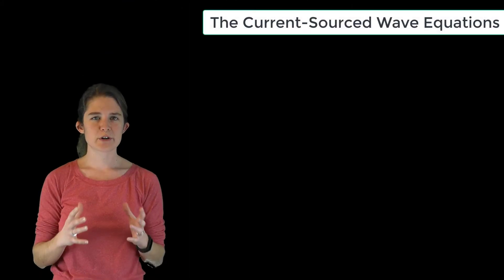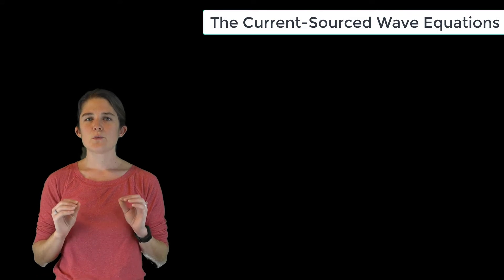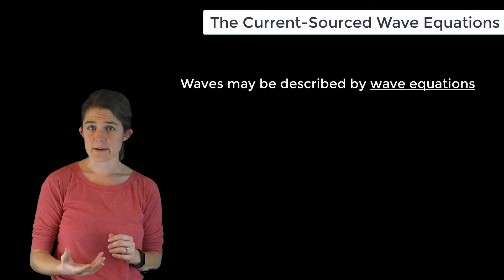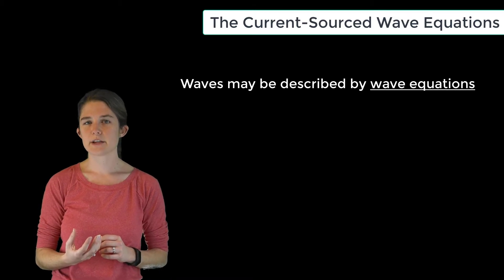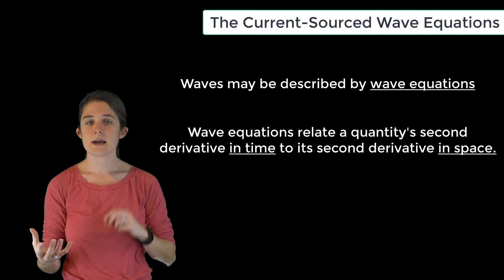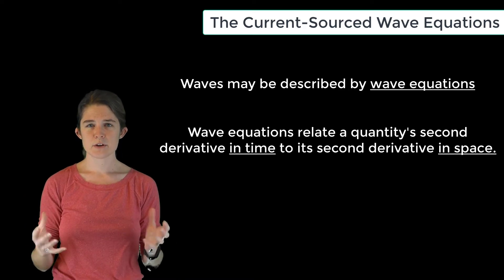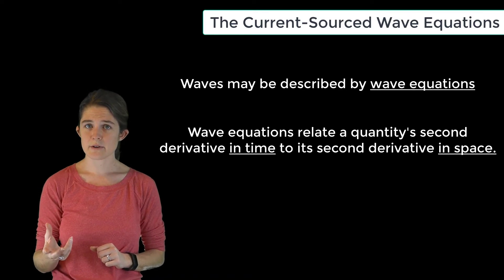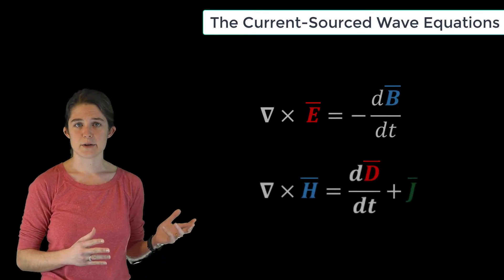Now let's look at this from a more strictly mathematical perspective. We know that for a quantity to be described as a wave it must satisfy a wave equation — there must be a relationship between its second derivative in time and its second derivative in space. To derive this equation for the current source electromagnetic wave, we will begin by considering Faraday's and Ampere's laws.